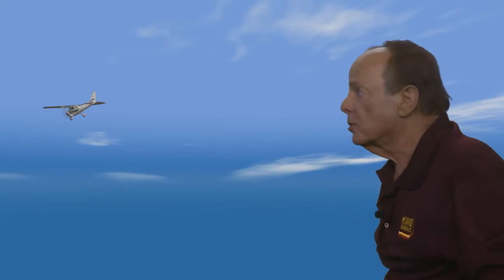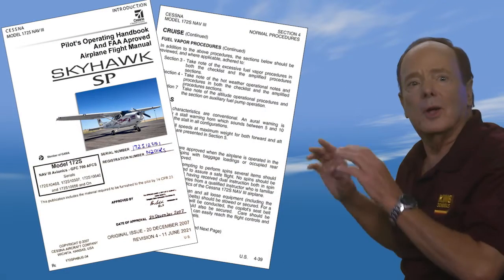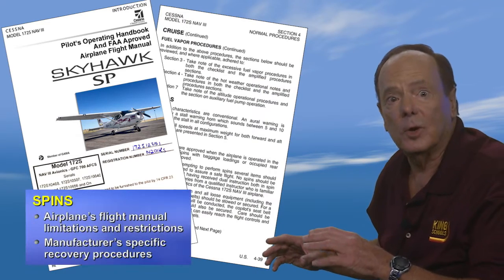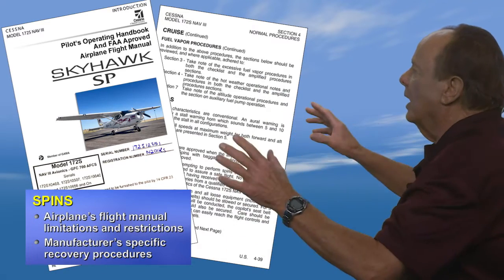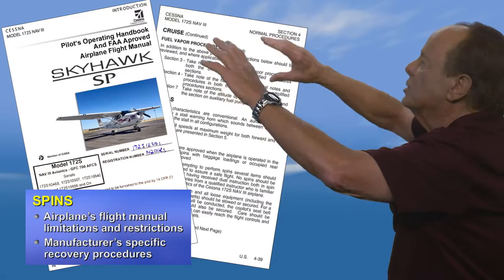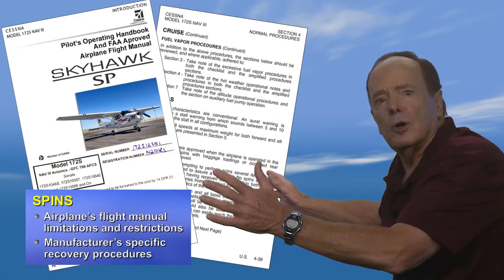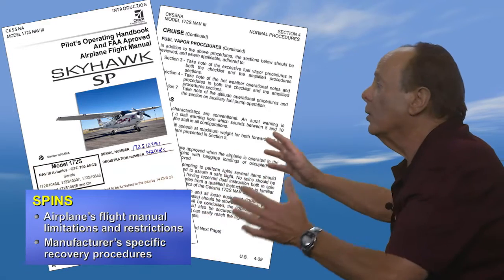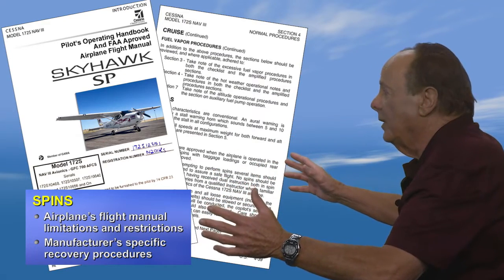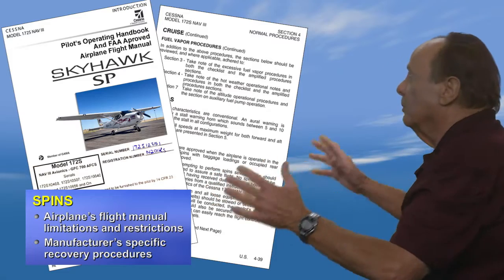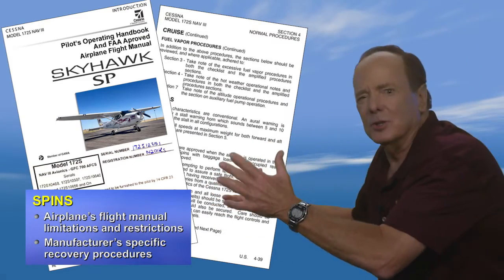As a flight instructor, the FAA says it's wise to know how to recover from a spin. Before getting into that situation, check your airplane's flight manual or POH for limitations regarding intentional spins. If spins are permitted, comply with any restrictions regarding loading and configuration. Then be intimately familiar with your manufacturer's specific spin recovery procedures.